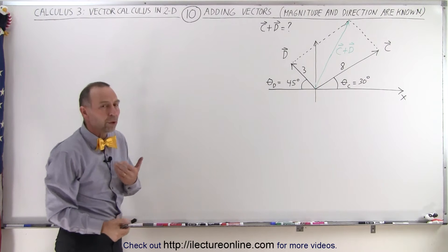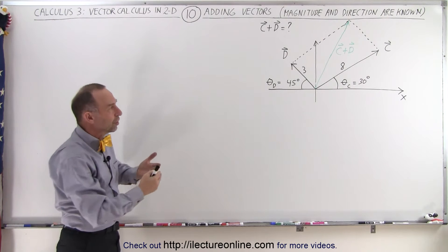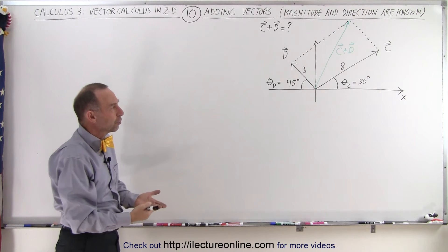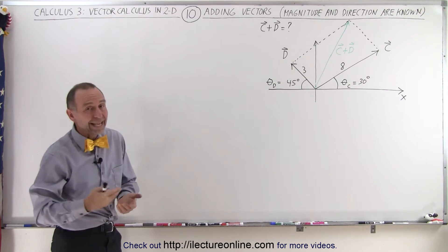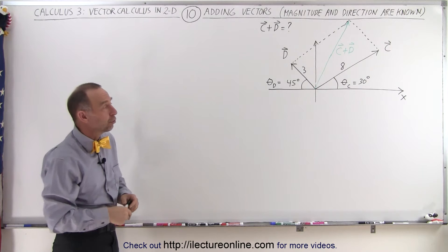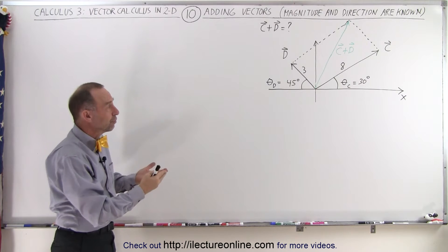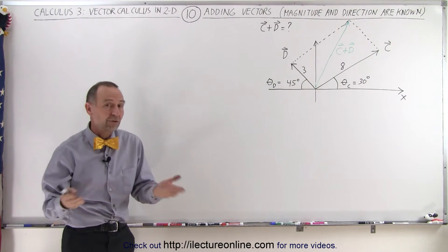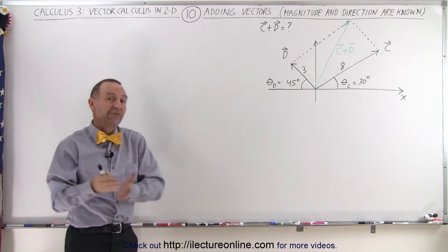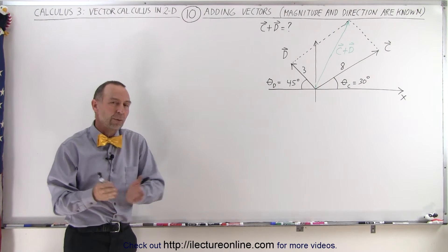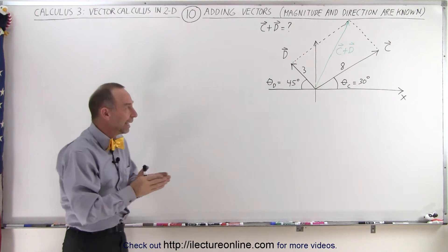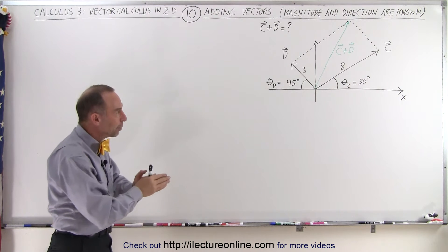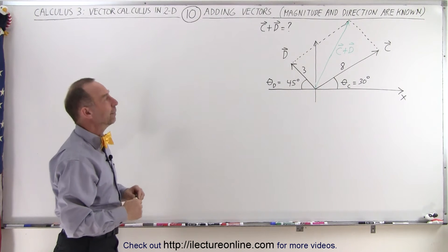But we also want to do it using their components. What we need to do first is find the x and y components of each of the two vectors, because when we add vectors together we must add the x components together and then the y components independently.